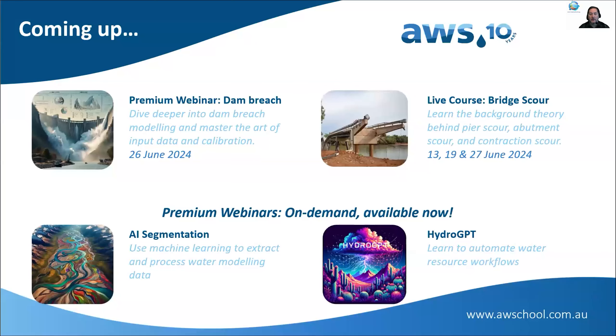And stay tuned — we do have a Tailings Dam Breach webinar coming up where we will have some Flow3D examples showing the layering. For routing that downstream, sometimes the effect goes kilometers downstream, and you're not going to want to do that in a CFD model. So you'll need to couple at the boundary condition.